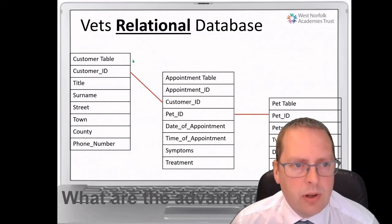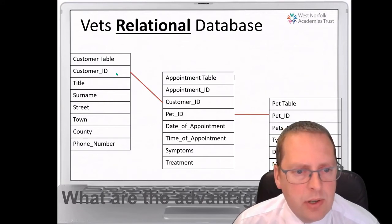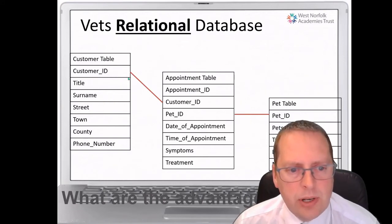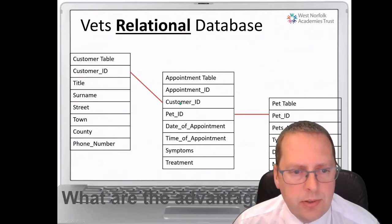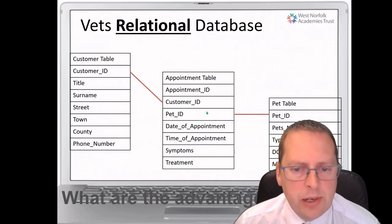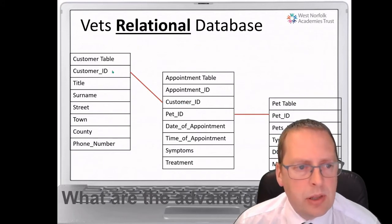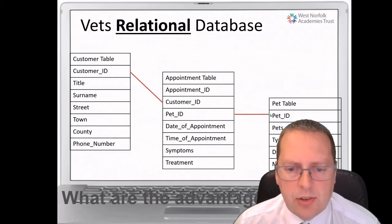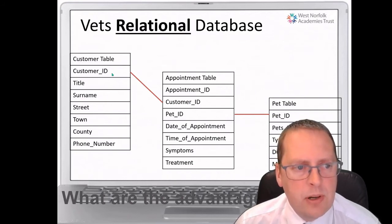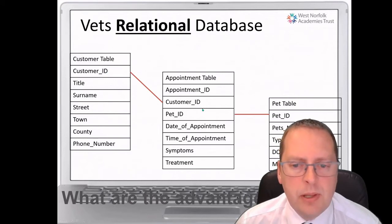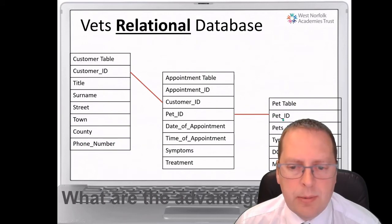This is how a relational database would look. There is a link between the customer ID in the customer table to the customer ID in the appointments table, and a link from the pet ID in the appointments table to the pet ID in the pet table. So we can see where the links actually happen in these databases.